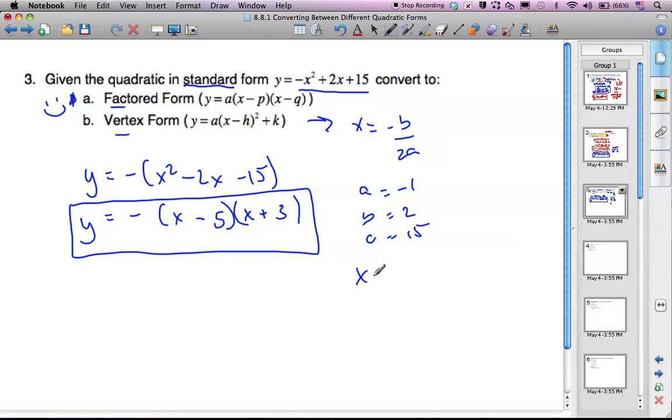Okay, so if I plug in my values, I get a negative 2 over 2 times a negative 1, which is negative 2 over negative 2, which is 1. Hooray! So x equals 1.